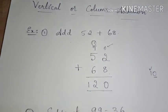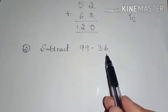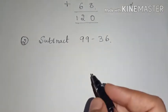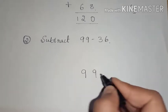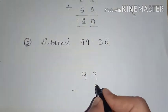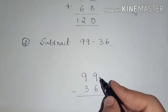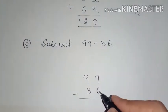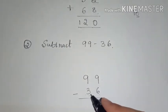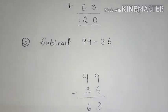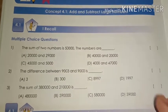Let us see one example of vertical or column subtraction. Consider 99 minus 36. Here also the same rules apply — write the numbers one below the other: 99 minus 36, with 6 in the ones place and 3 in the tens place. Now, 9 minus 6 is 3, and 9 minus 3 is 6. The answer is 63.